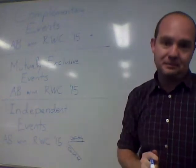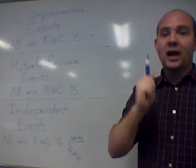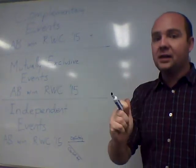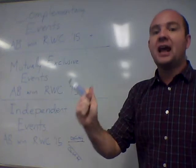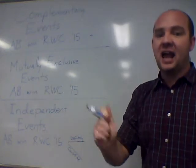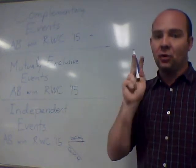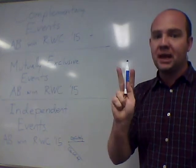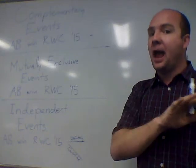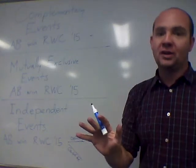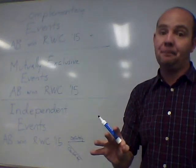Complementary events. This is where one event or the other event has to happen — one of them has to happen. You've got a matching pair: one of them has to happen, and both can't happen at the same time.